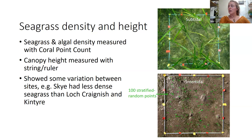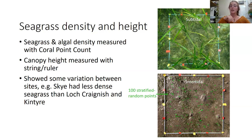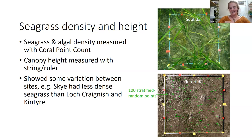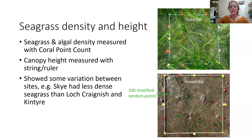In CoralPointCount, I overlaid 100 points in a random grid over each photo, then went through every single point saying what was under it — seagrass, a type of algae, mud, stone, or whatever — to look at percentage cover. I also measured seagrass height using a ruler in the intertidal or a piece of string with 10-centimeter intervals in the subtidal to estimate canopy height. This shows the variation in habitat structure between sites — for example, Skye had less dense seagrass than Loch Craignish and Kintyre, with more of a mix of algae.